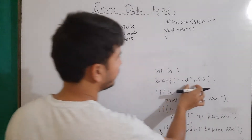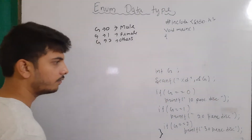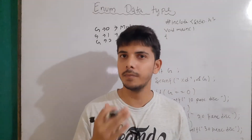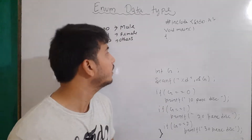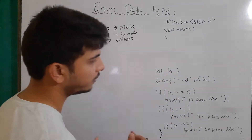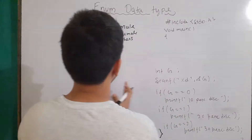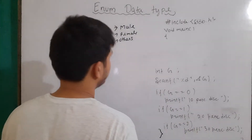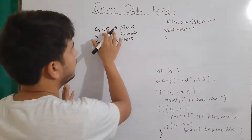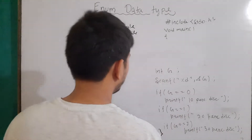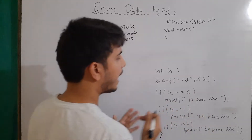I have made here a variable and simply taken the input as g. Based upon the gender, the output will be shown. But let's say somebody else, some other programmer, sees your code. When he sees this code, will he be able to recognize that g equal equal zero means male, or g equal equal one means female, or g equal equal two means others? No, he will not. Because you have to explicitly tell that whenever g is zero, we are considering it male. This approach is okay, but it could be improved with the help of enums.